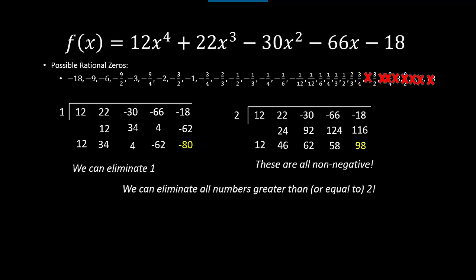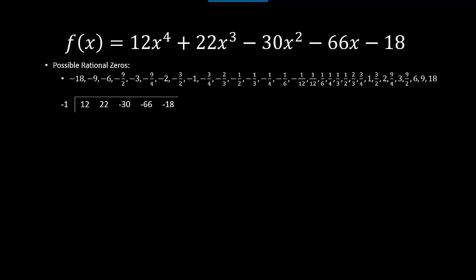Now let's try some negative values. I'll try −1. Synthetic division gives a remainder of 8, so −1 is not a zero. Looking at the bottom row to see if the values alternate in sign — in this case they do not, which means all I can eliminate at this point is −1.